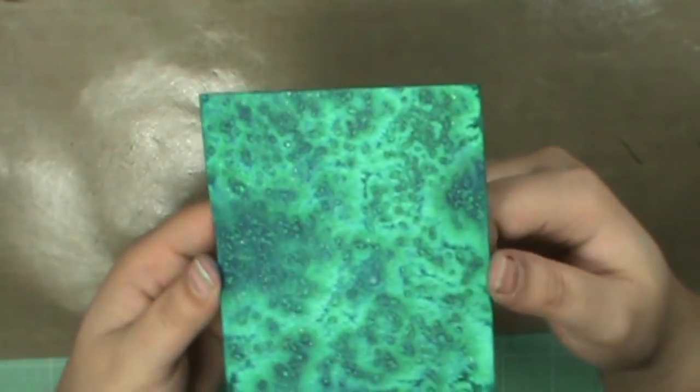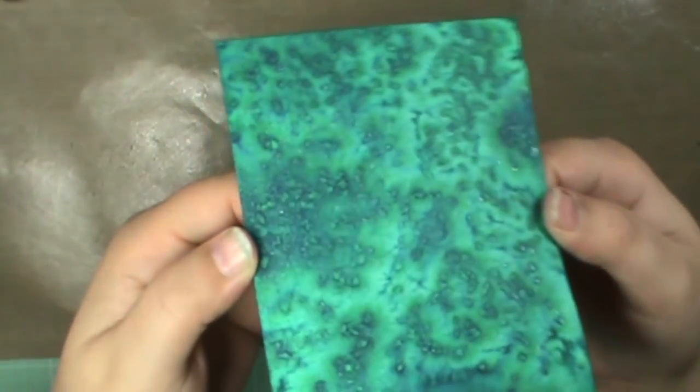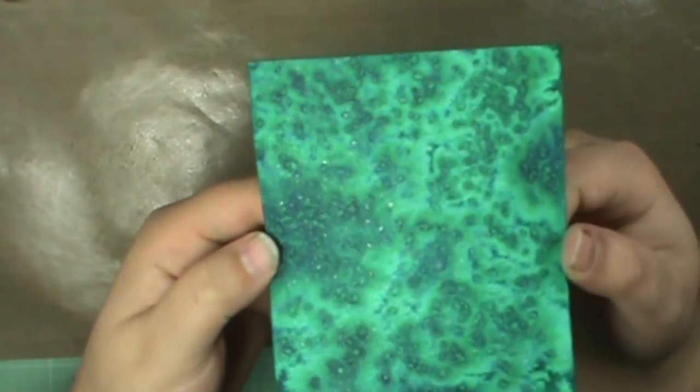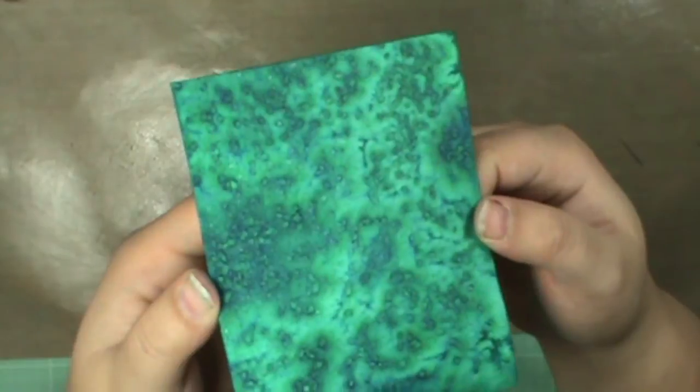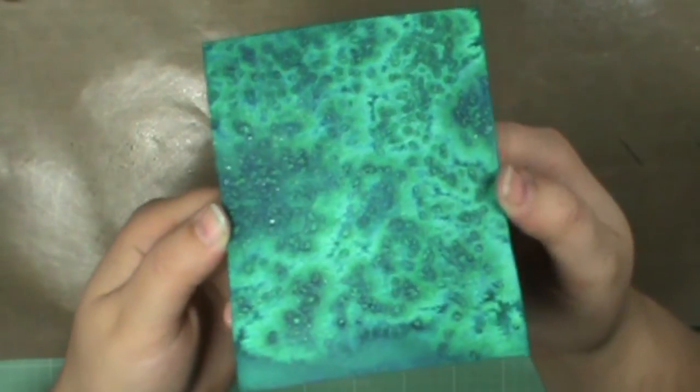And then there is, if you can see it, but when you twist it, there's like a little bit of, it almost looks like there's little pieces of glass embedded in the cardstock, and that's just from the salt. So it's really cool. It's like glittery glass.